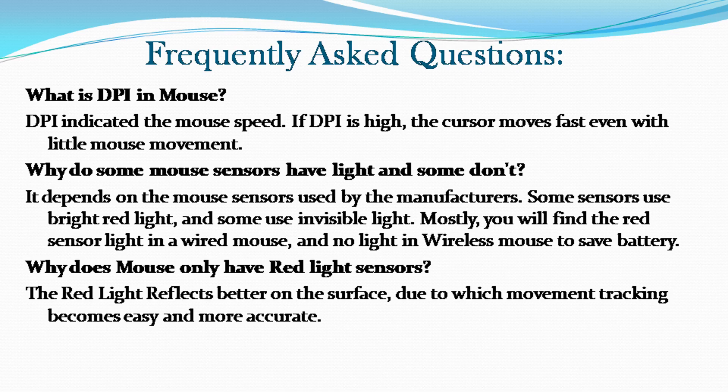Why does a mouse only have red light sensors? The red light reflects better on the surface, due to which movement tracking becomes easy and more accurate.